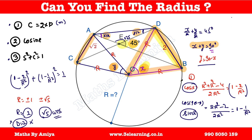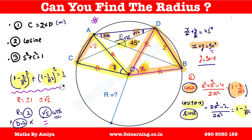In triangle ODB, the cosine formula gives cos x = 1 − 2/r². In triangle AOD, since y = 90° − x, we get cos(90° − x) = sin x, which equals 1 − 1/r². Then applying sin²x + cos²x = 1 gives us the final answer. This is an easy question — very simple but very important. Save your notes or take a screenshot.